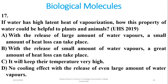Question 17: If water has a high latent heat of vaporization, this property helps plants and animals in maintenance of temperature. The release of a small amount of water vapor allows a great amount of heat loss to take place.